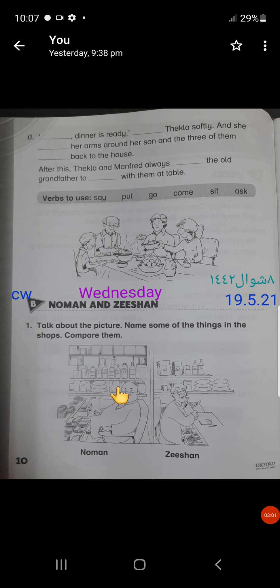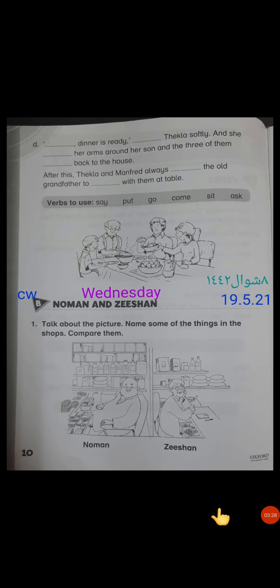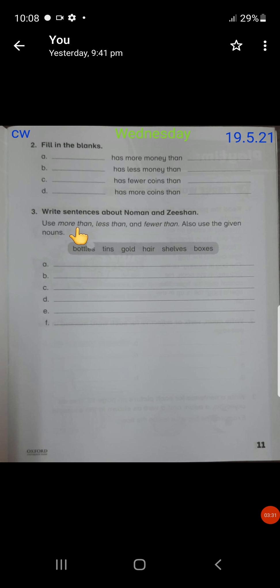You have to turn to page number 11 and over here you have to write down the date again. Exercise B2 is fill in the blanks. Now here you have to write down who has more money, who has less, who has fewer coins and who has more coins. You have your books open in front of you. You have to find out who has more money as you can see better.